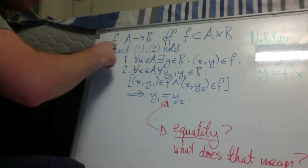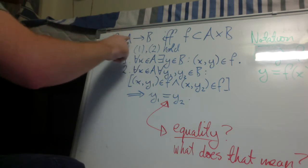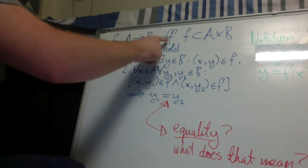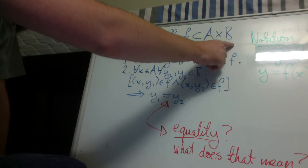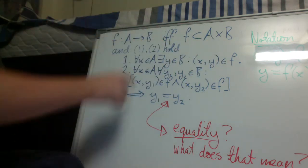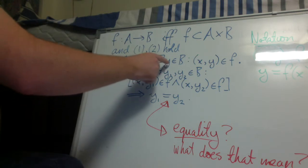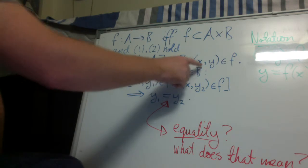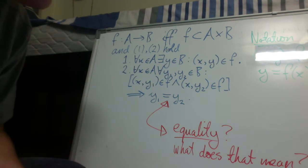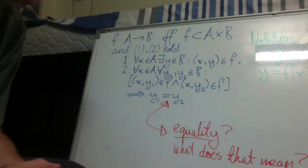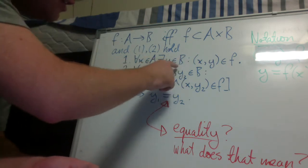So F is a function mapping the domain A into the codomain B if and only if F is a binary relation on the Cartesian product of A cross B and 1 and 2 hold, where 1 states that for all x in the domain, there exists a y in the codomain such that x comma y is an element of F. So essentially what the first condition says is that every element of the domain is mapped to some element in the codomain.